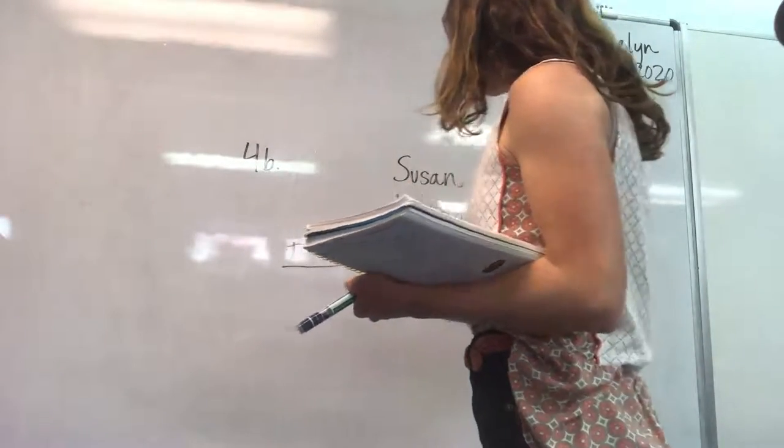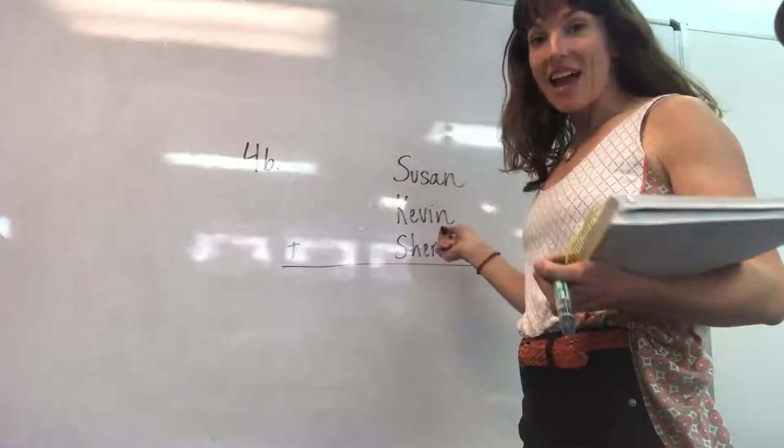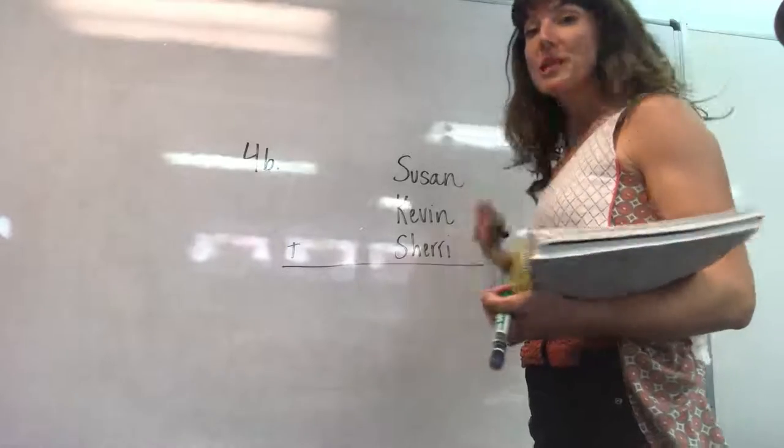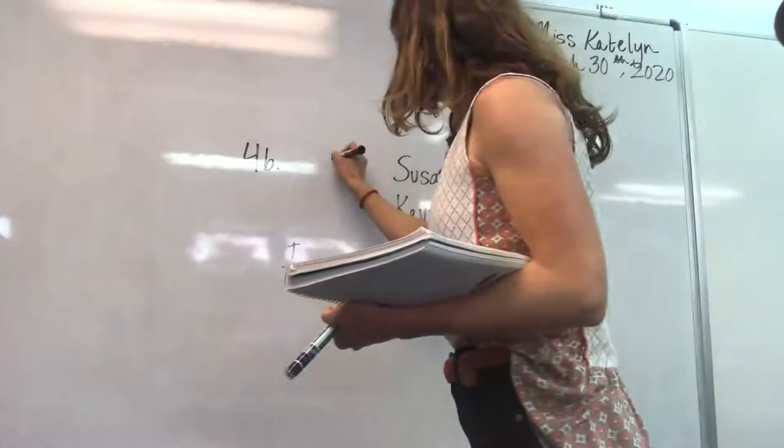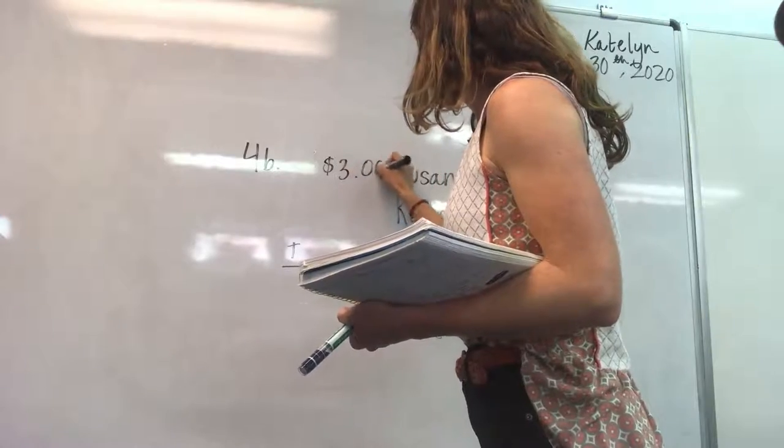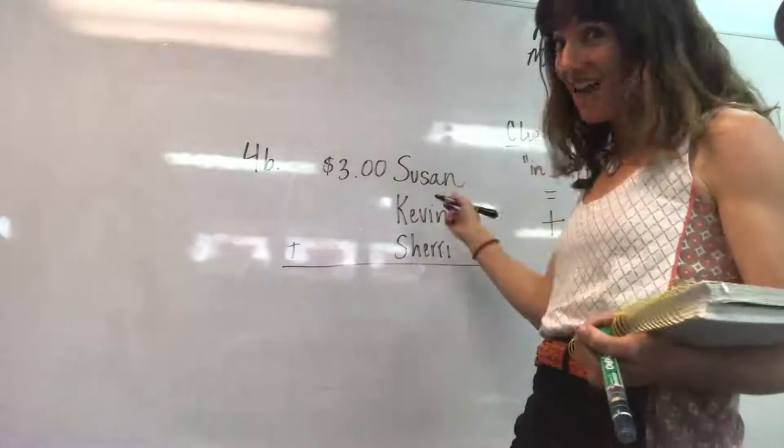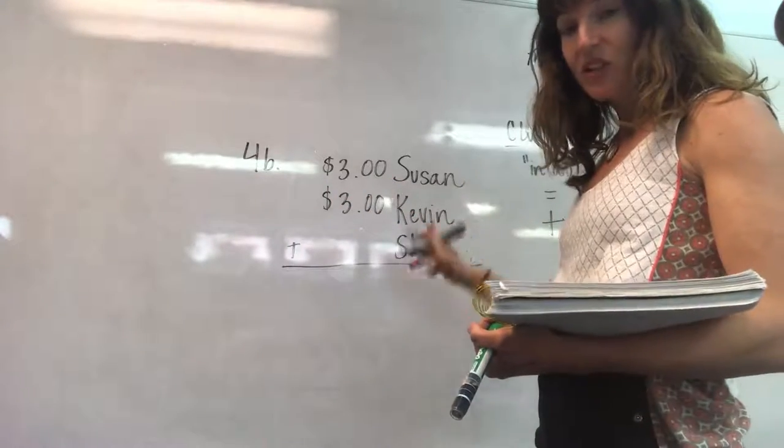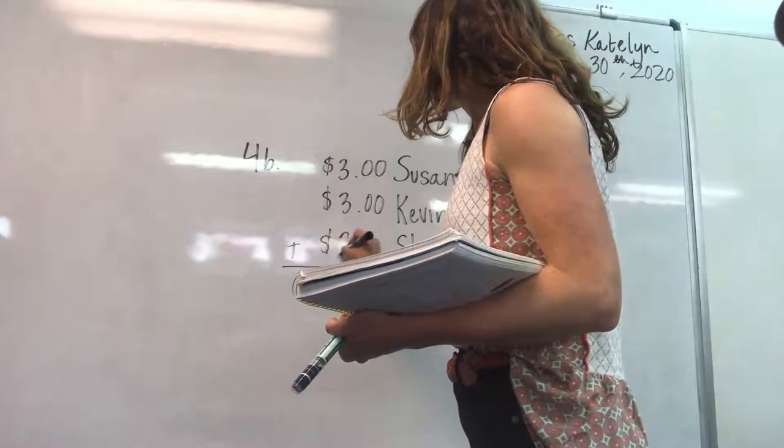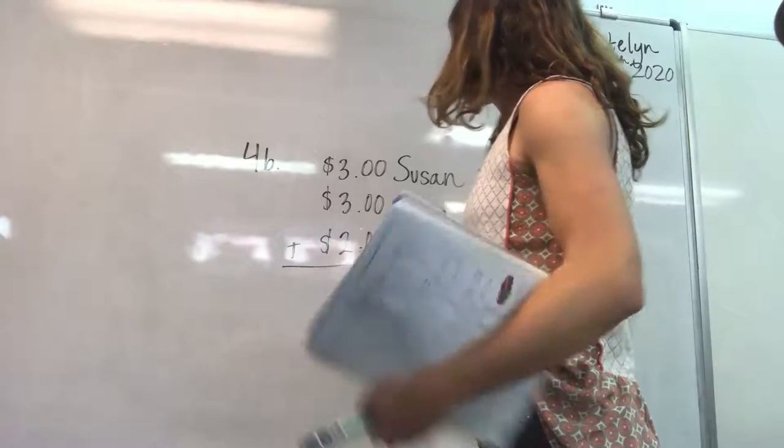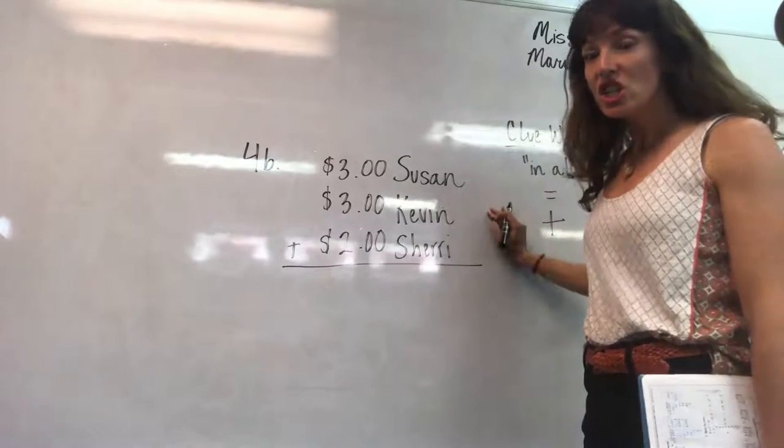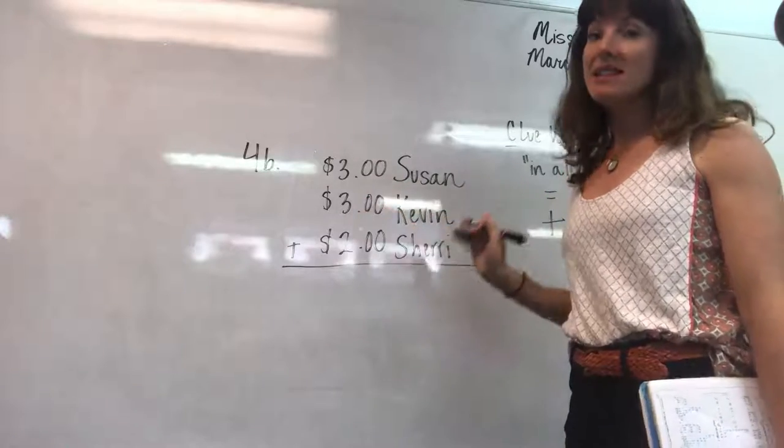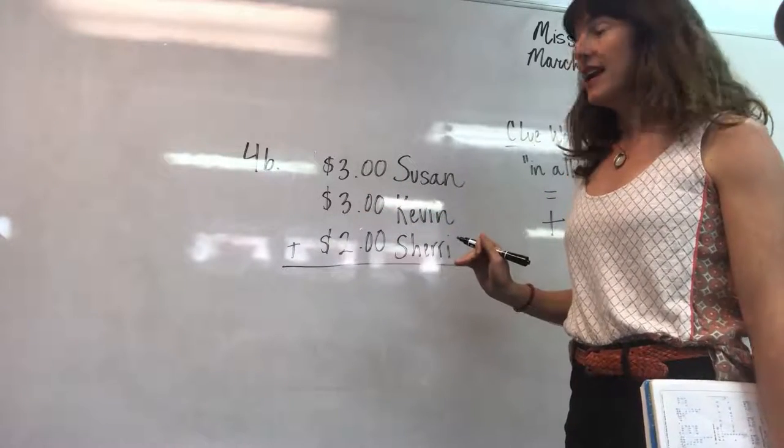Okay. And in all tells us to add. Now, how much did Susan and Kevin each spend? They both spent the same amount. Susan spent $3. And Kevin spent $3. Sherry spent $2 on candy. Okay. Each. When they each do something, that means by every name, there has to be the same number.